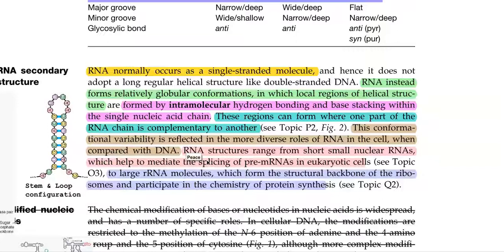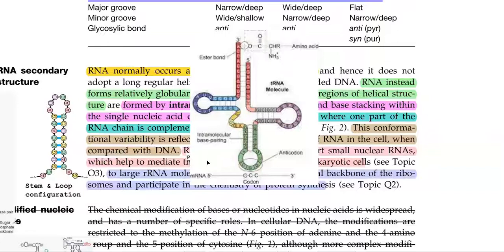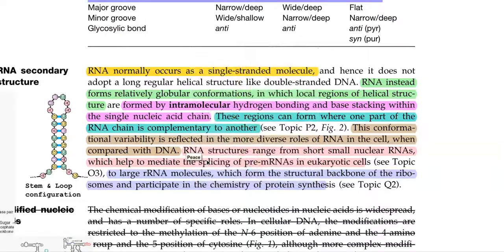DNA serves just as an information molecule — that is, a hereditary information-carrying molecule. However, RNA serves as a hereditary carrier in certain viruses. Apart from that, RNA has a lot of functional roles. One example is transfer RNA, which is required to bring a particular amino acid to the ribosome to help continue the translation process. Similarly, rRNA with its stem and loop configuration is essentially required to form a functional ribosome, so that the translation process can be mediated.